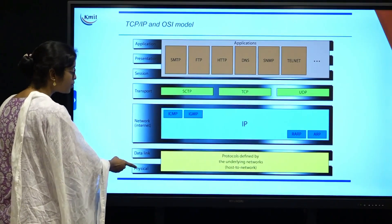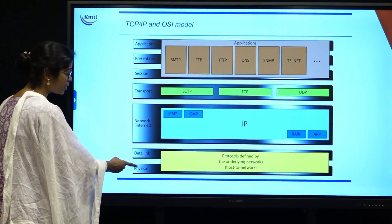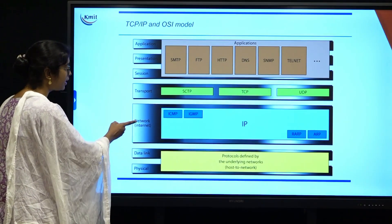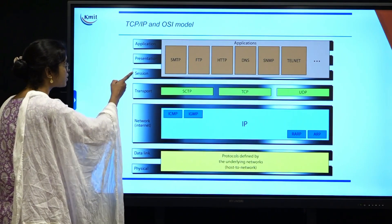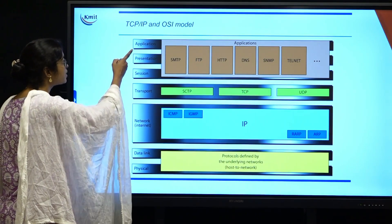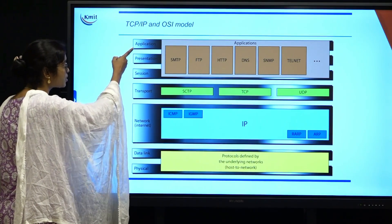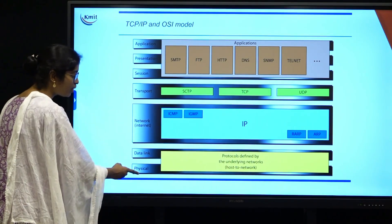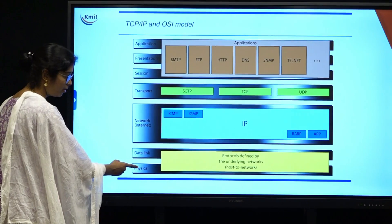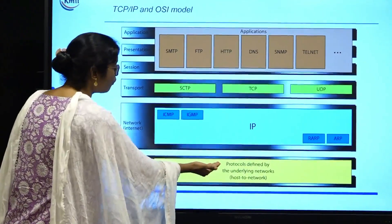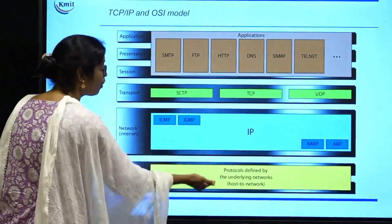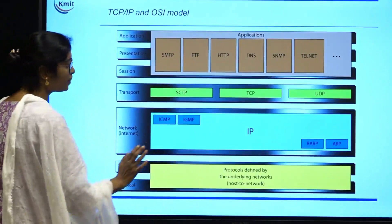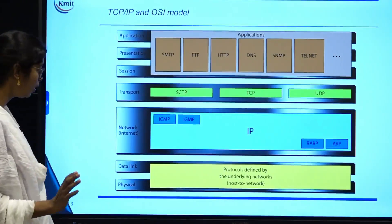You can see the 7 layers: physical layer, data link layer, network layer, transport layer, session, presentation, and application. These 7 layers of the OSI model are mapped with the 4 layers of the TCP/IP model.